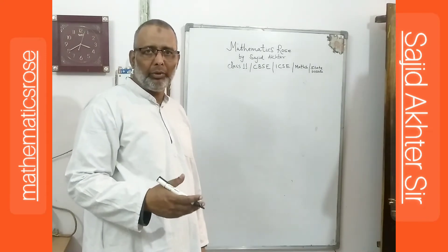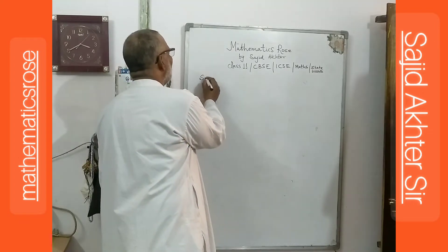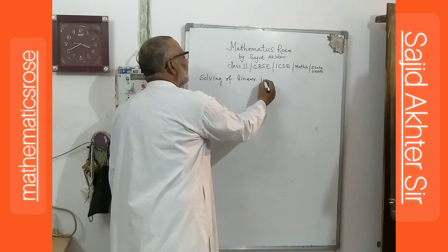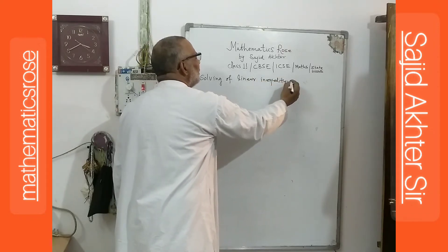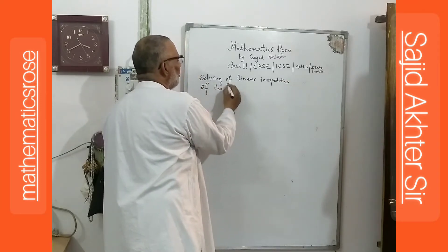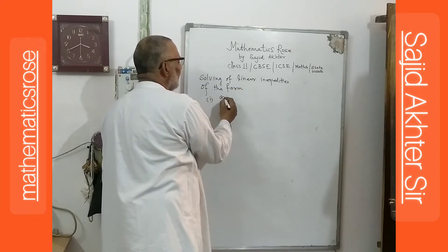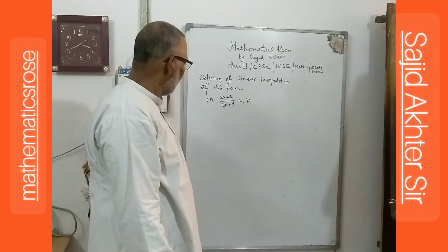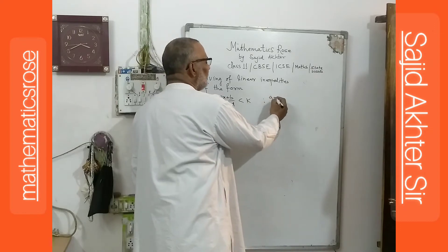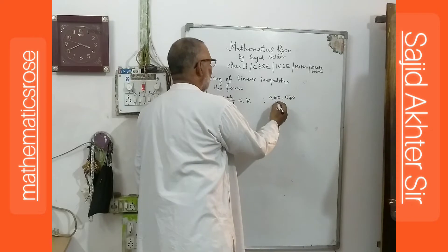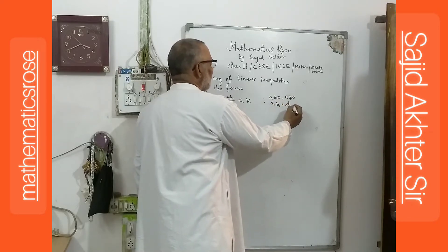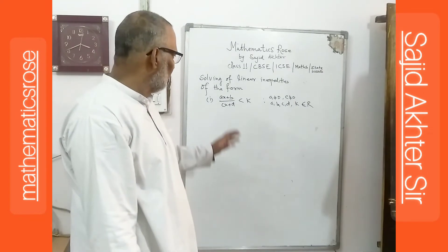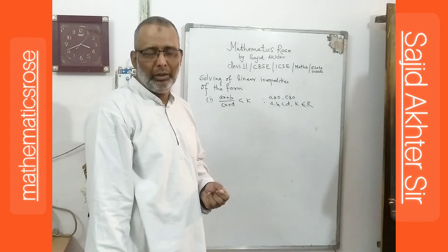We have to solve the linear inequality of the form: (ax + b) divided by (cx + b) is less than kx, where a, b, c, and k are constants. Here a is not equal to 0, c is not equal to 0, and a, b, c, and k all belong to the set of real numbers, whether positive or negative. So, how do we find the solution of this type of linear inequality?